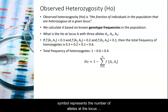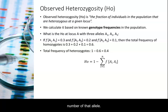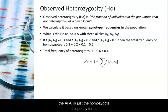The n symbol represents the number of alleles at the locus, which can vary, and the i indicates the sequential number of that allele. The f indicates the frequency, and the a-sub-i, a-sub-i is just the homozygote frequency for each homozygote at each sequential allele.